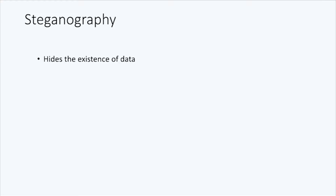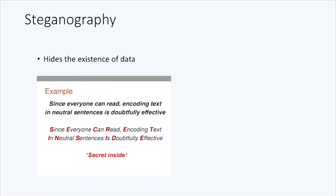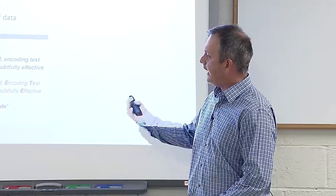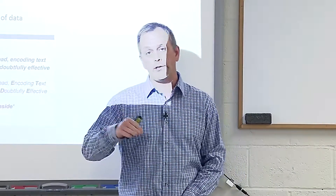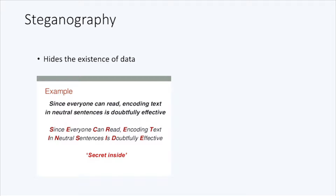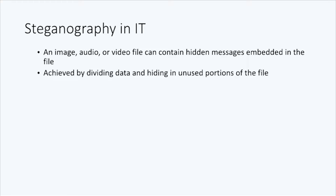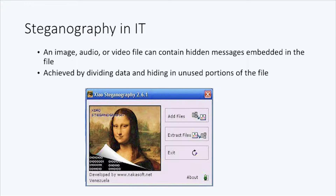Steganography is another term that some people sometimes confuse with cryptography. Steganography merely hides the existence of data. It traces its roots back many years as well. One readily available example was identified during World War II when covert agents injected hidden messages into public newspapers — if you knew the sequence of letters to pull out of an article, you could assemble a legible message. Today in IT, steganography has the same concept but is executed differently: an image, audio, or video file that contains hidden messages embedded in the file, such as a JPEG image with hidden messages written in the code itself.